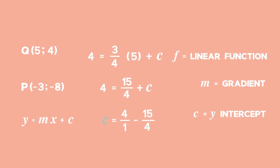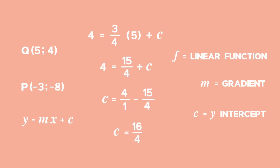In order to solve for c, you will have to find the lowest common denominator, which is 4, and multiply 4 over 1 by it, which will give you 16 over 4. Now, subtract 15 over 4 from 16 over 4, which will give you a value of 1 quarter.